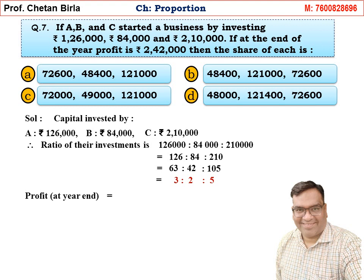Total profit is Rs. 2,42,000. A's share = (3/10) × 2,42,000 = Rs. 72,600. Checking the options, 72,600 appears in Option A. Since Option A contains 72,600, we can confirm 100% that Option A is the answer.